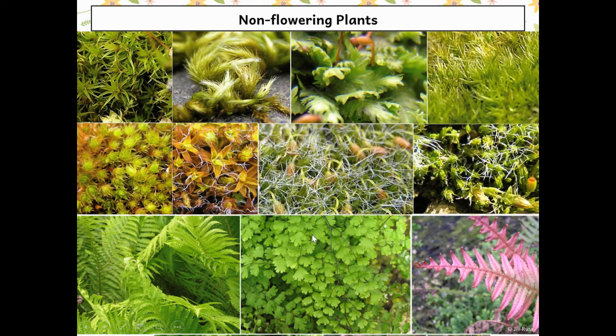Now I have a question — think about this. If I look at a plant and it doesn't have a flower today on it, can I just say that means it's a non-flowering plant? No, I can't. Not every plant produces a flower all year round. There are lots of plants that only make flowers at certain points in their life cycle or in its season. So just because we don't see a flower doesn't mean that it's a non-flowering plant.